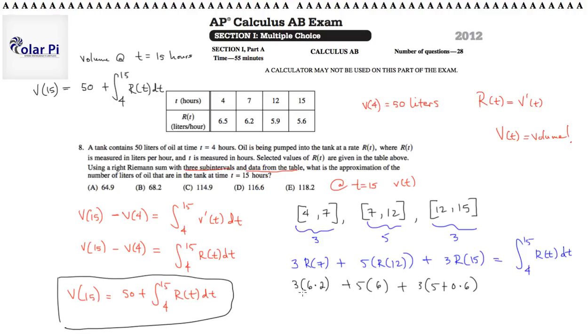And so, 3 times 6.2 should be 18.6. Right? And then we have plus 30. And then plus 15 plus 1.8. Right? Okay. That's 16.8. So, 18.6 plus, together, these two guys make 16.8.